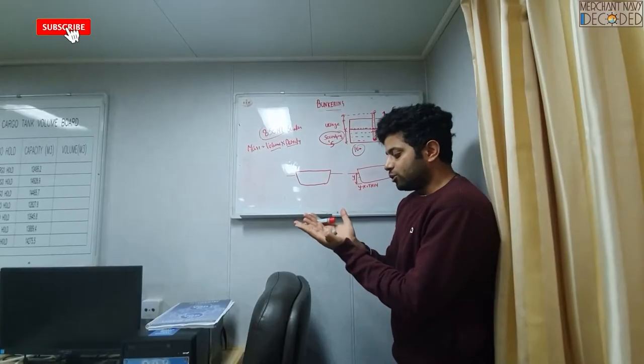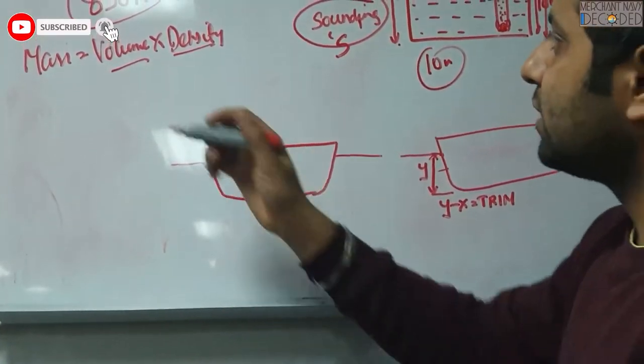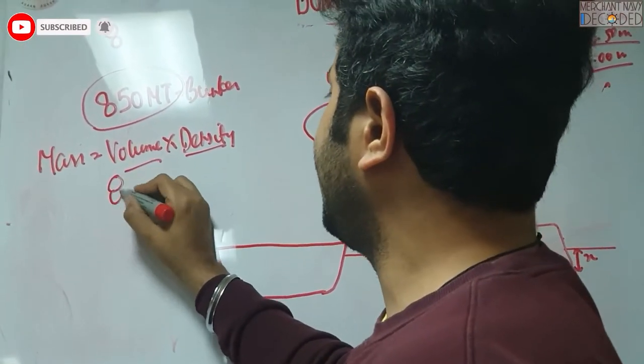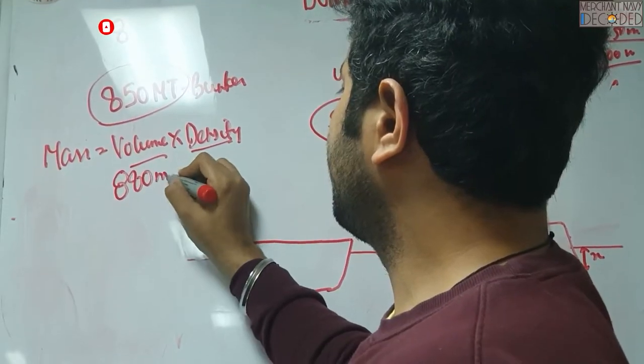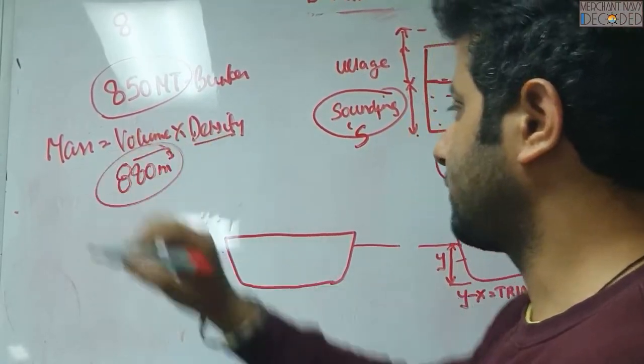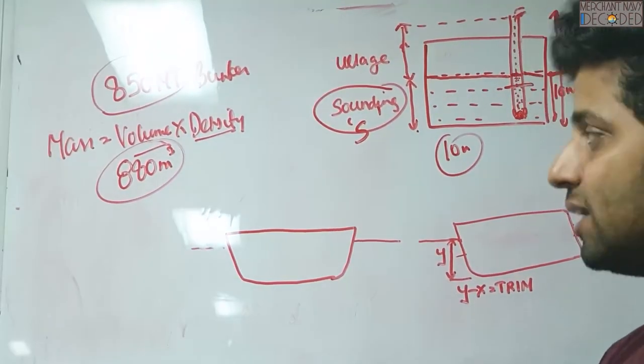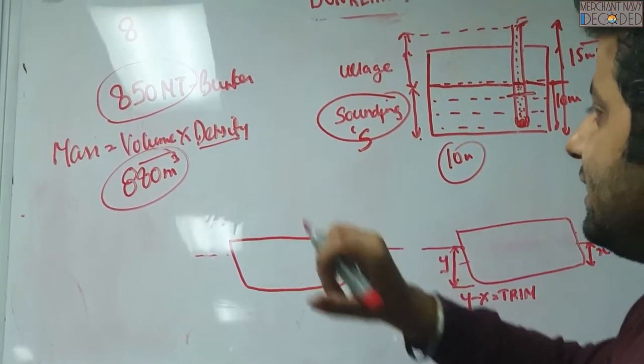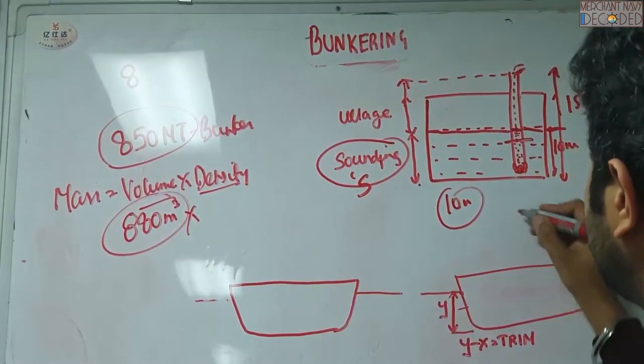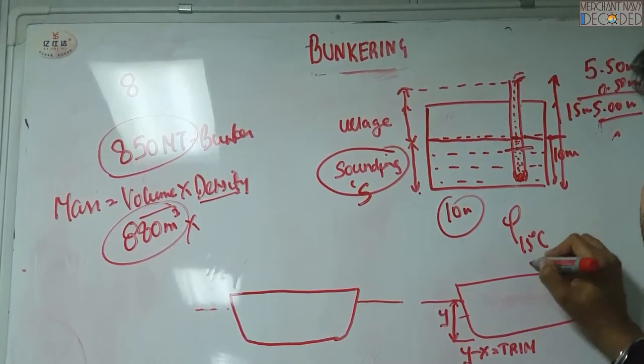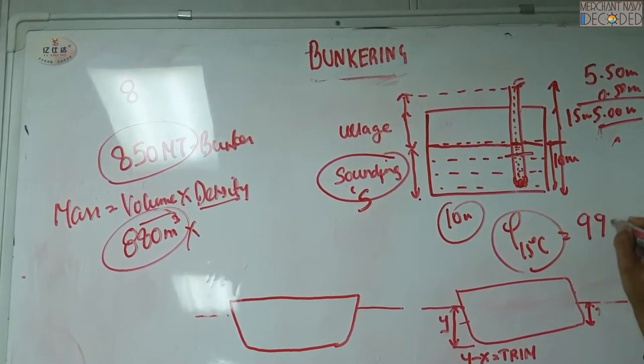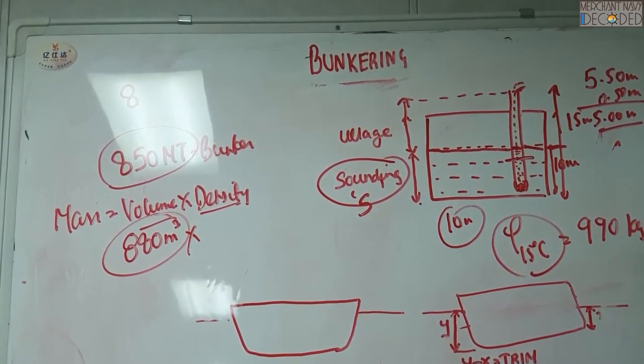So 10 meters recording, I go into the table and I see, okay it should be say 880 meter cube. This is what I have got. Now second thing is, what I need is density. But I have got density at 15 degree centigrade, say 990 kilogram per meter cube. But the temperature over here is 40 degree centigrade.